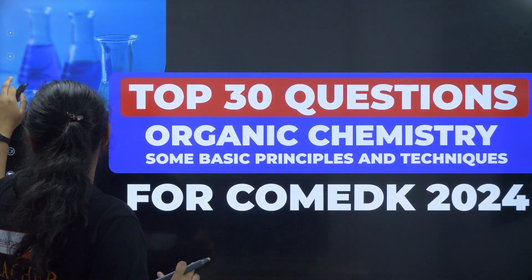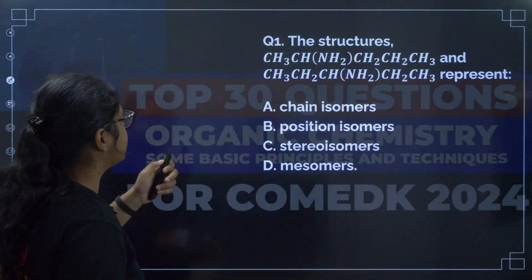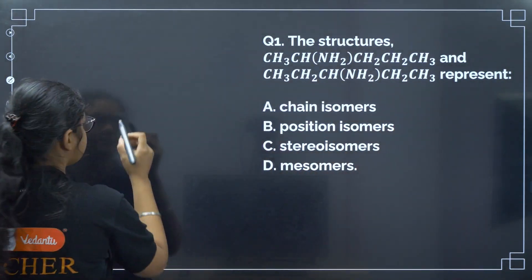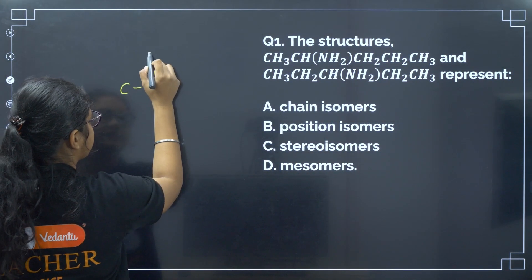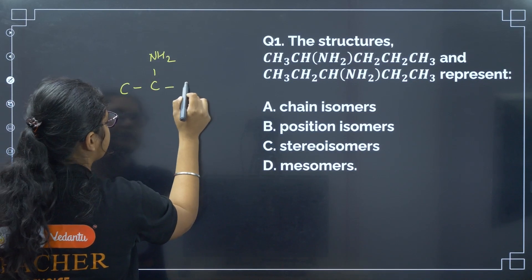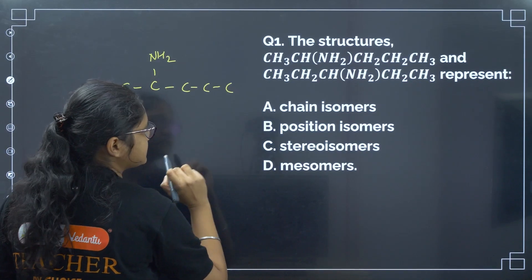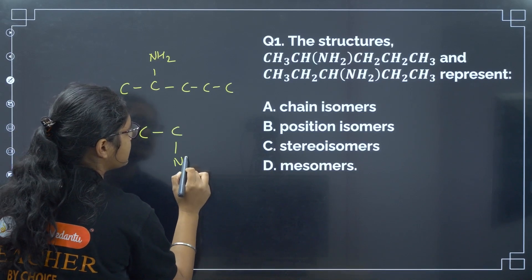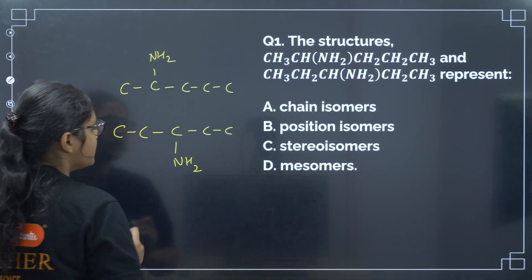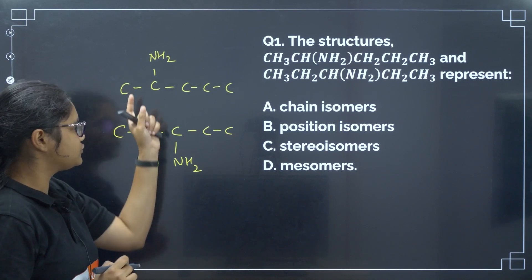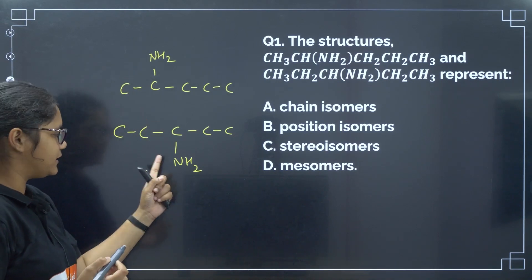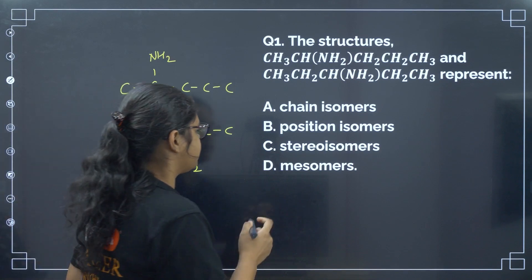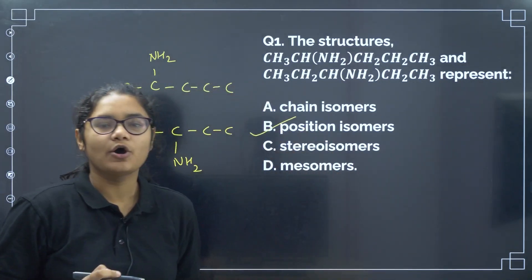Let us start with the first question. The structures given represent: first is CH3-CH(NH2)-CH2-CH3, and the second is CH3-CH2-CH(NH2)-CH3. You can see the NH2 group is attached on the second carbon in the first and on the third carbon in the second — different positions. So it is definitely position isomers. Correct answer is option number B.